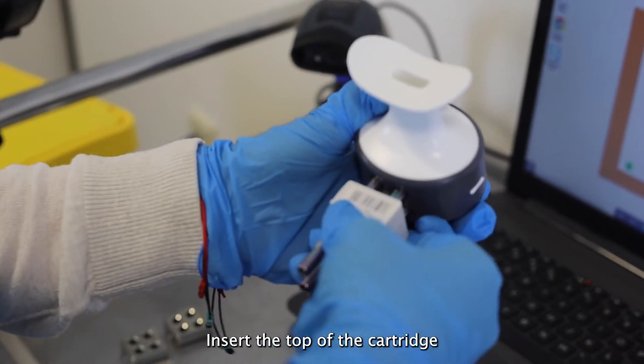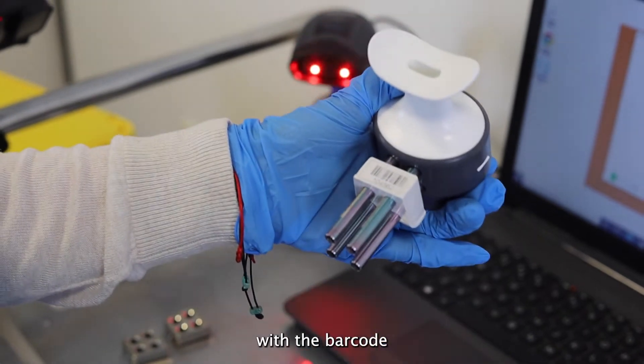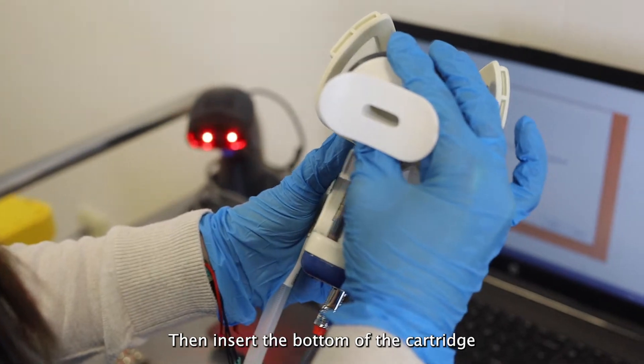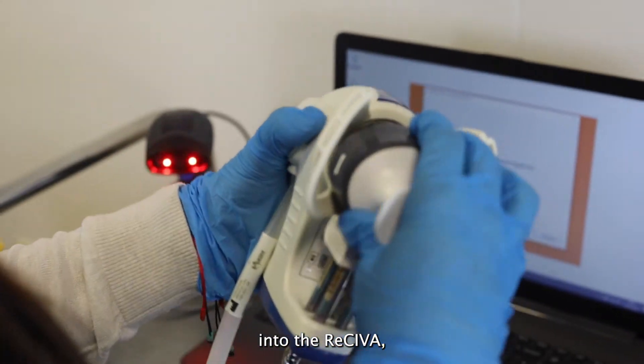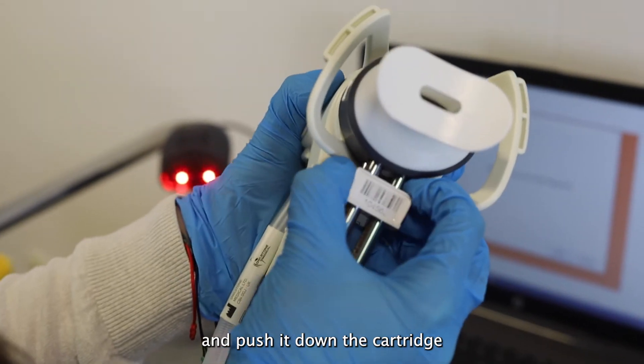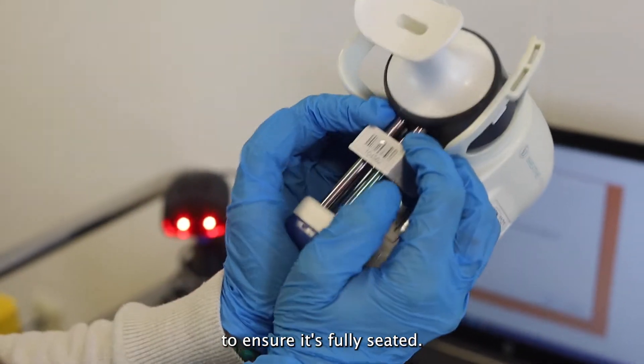Insert the top of the cartridge into the mouthpiece with the barcode facing out towards you and upright. Then insert the bottom of the cartridge into the receiver. Push the mouthpiece back into the housing and push down the cartridge as far as possible to ensure it's fully seated.